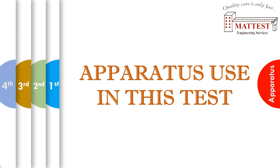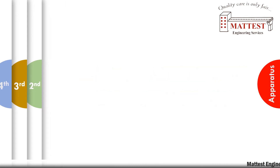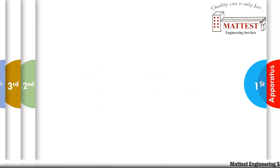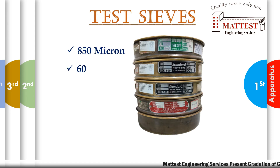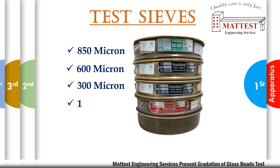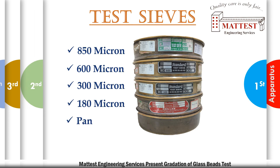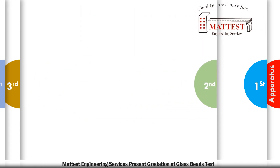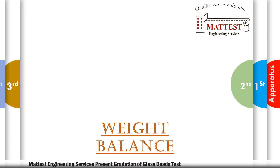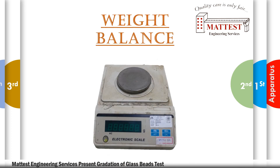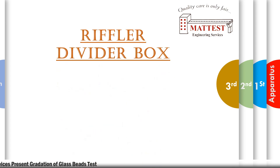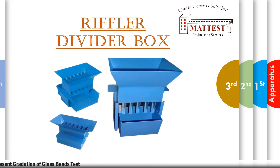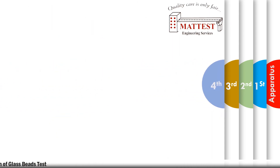Apparatus used in this test: First, test sieves — 850 micron, 600 micron, 300 micron, and 180 micron. Second, balance. Third, riffle box. Fourth, hot air oven.